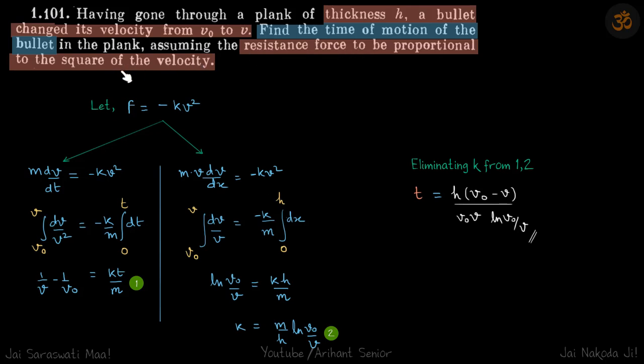The force is resistance, so we will write force as minus kV squared. From here we'll do dV by dt and V dV by dx to find a relation between V and T and V and X.